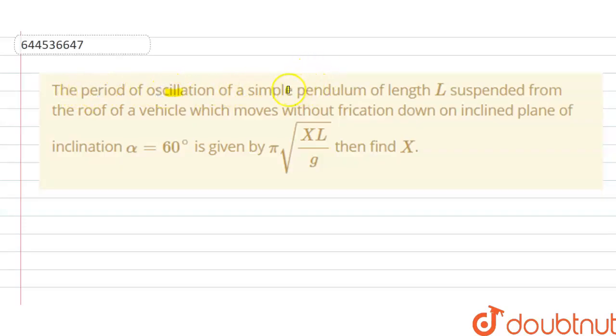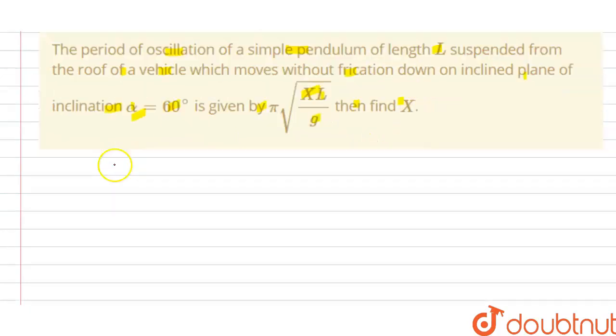the period of oscillation of a simple pendulum of length l suspended from the roof of a vehicle which moves without friction down an inclined plane. The inclination alpha is 60 degrees. Period is given by π√(xl/g). Then we have to find the value of x.